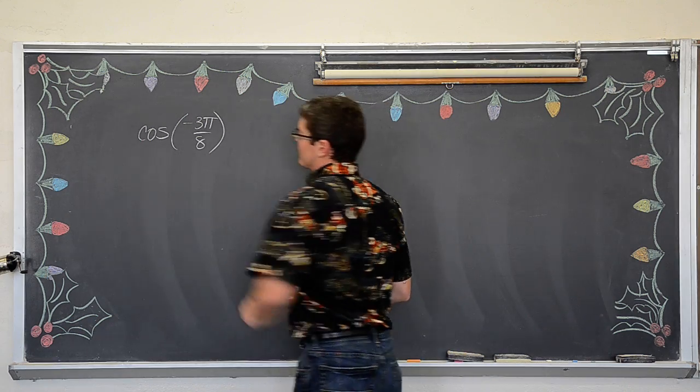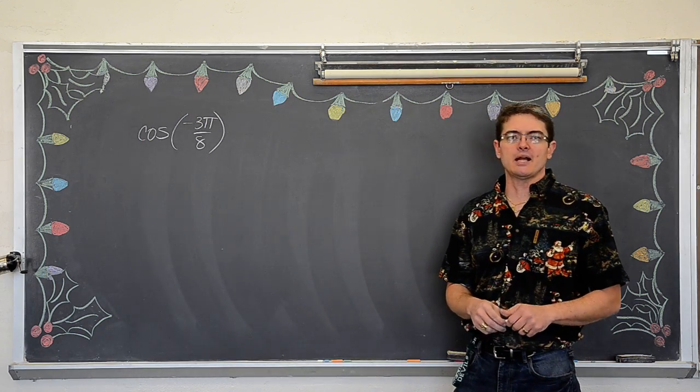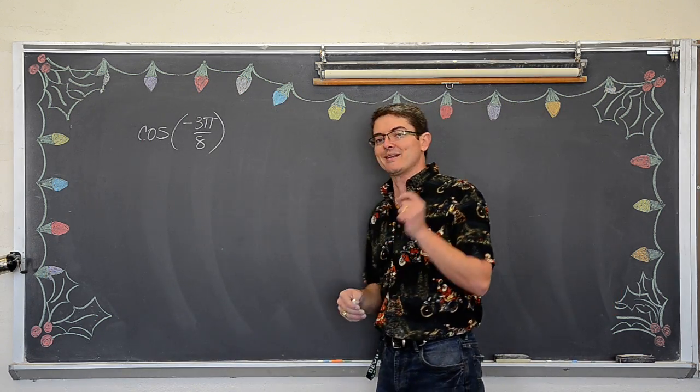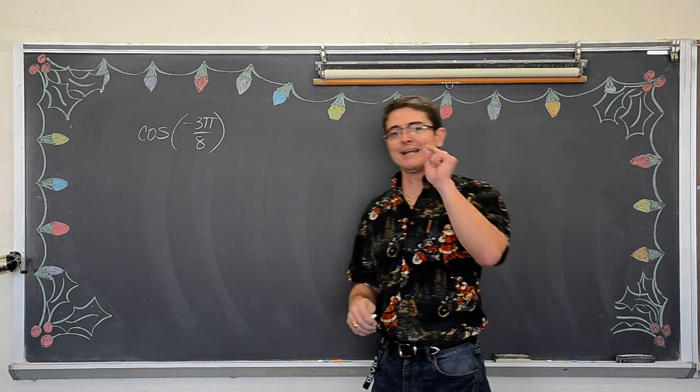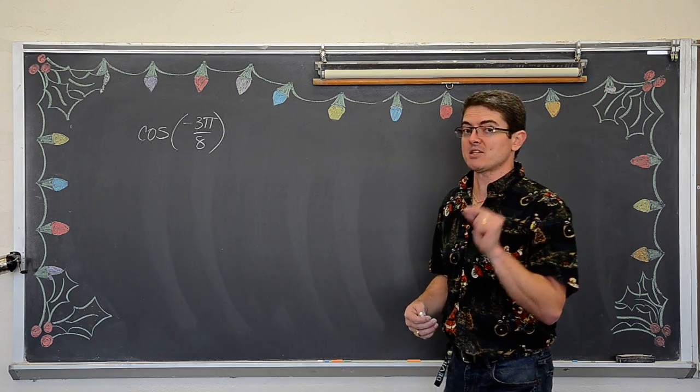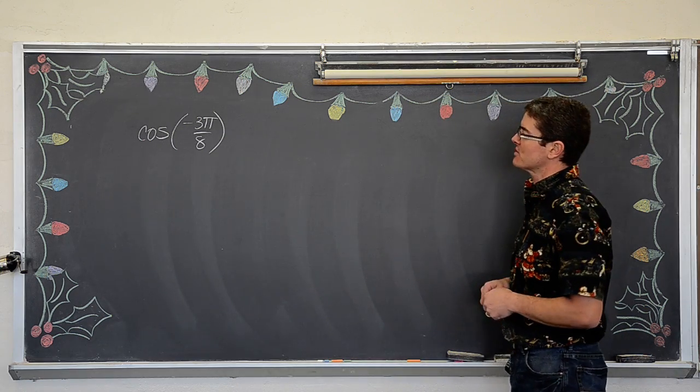We got the cosine of negative 3π over 8 and I want to evaluate that on the unit circle. I want an exact value answer, no decimals. I don't care if there are 20 decimals. I want an exact answer, which means no decimals, like square root of 7 is left square root of 7.